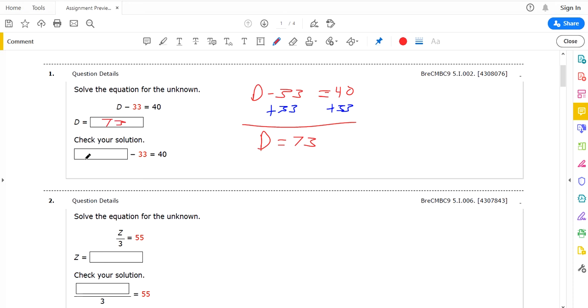And then the system just wants you to plug in 73 down here to check your work. You can check to see if you're right on your own. You can plug 73 in for the letter D. And 73 minus 33, that makes 40. So that checks out.